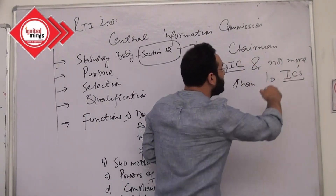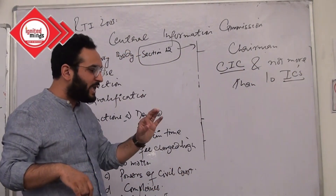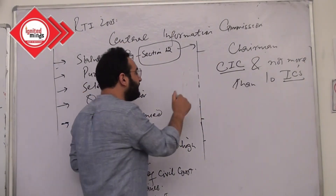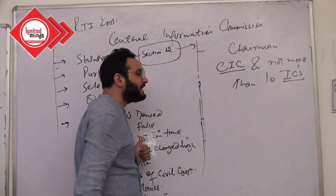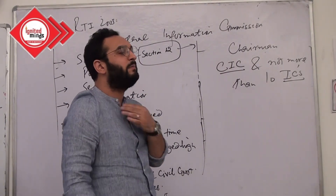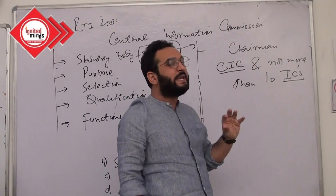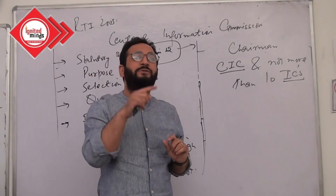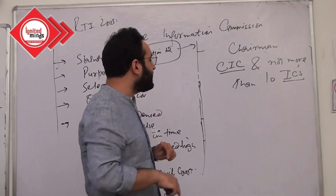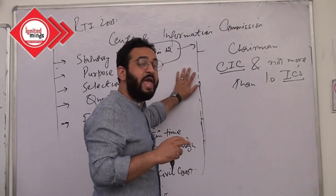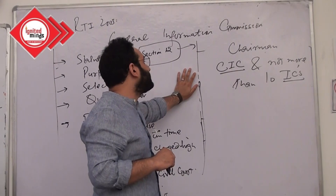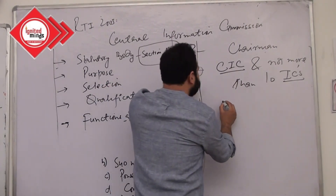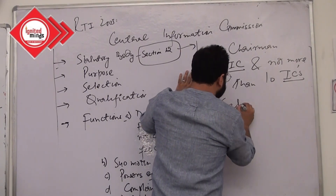For the CIC and 10 Information Commissioners, the first principle of independent functioning was how their selection would happen. In their appointment, it has not been left entirely or directly in the hands of the government of the day. In order to bring in some neutrality in the appointment process, we have gone for something called a Selection Committee.